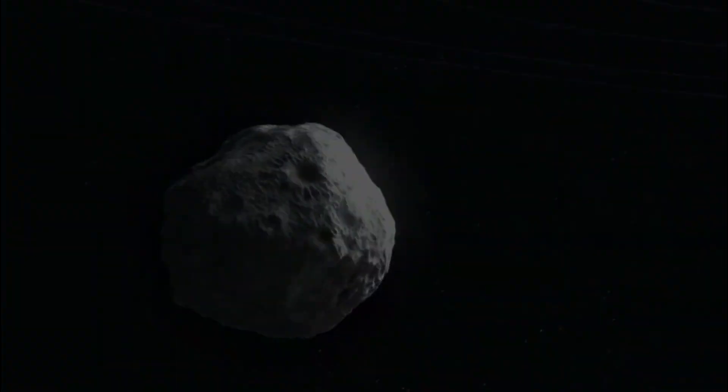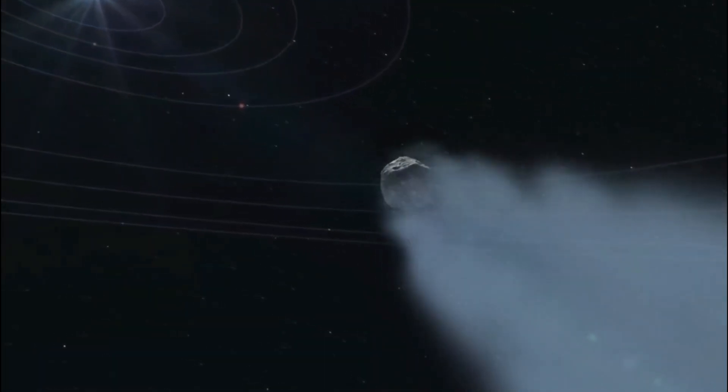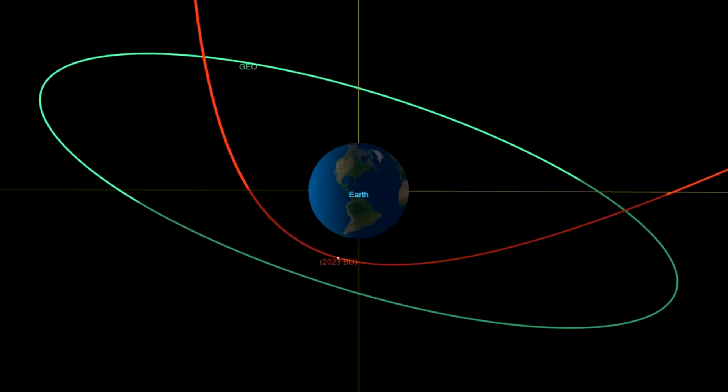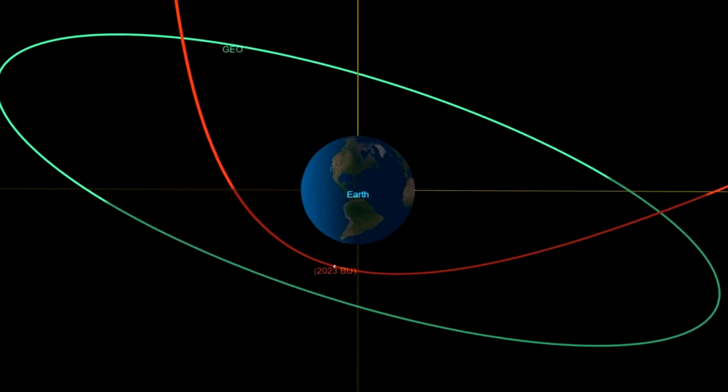It passed about 2,200 miles, or 3,540 kilometers above Earth's surface. This distance was well within the orbit of global satellites. There was no risk of the asteroid striking Earth, according to NASA.